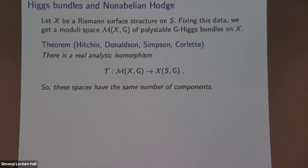In particular, the character variety and the Higgs bundle moduli space have the same number of components. Higgs bundles are more complicated objects, so their moduli space comes with more structure, giving more tools to study the topology. The character variety has a natural symmetry of the mapping class group of the surface, but once I've picked a Riemann surface, I break that symmetry. So this isn't a better space — it's just a different space with the same topology.